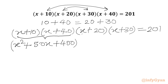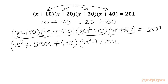Now we multiply the second two brackets. We write x times x giving x squared, x times 30 is 30x, 20 times x is 20x, so 30x plus 20x is 50x, and 20 times 30 is 600.